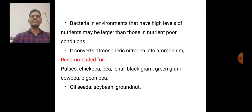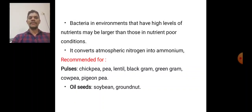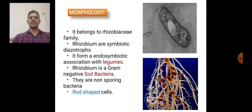Bacteria in environments with high levels of nutrients may be larger than those in nutrient-poor conditions. Rhizobium converts atmospheric nitrogen into ammonium. It is recommended for pulses such as chickpea, lentil, black gram, and green gram, as well as oilseeds such as soybean and groundnut.